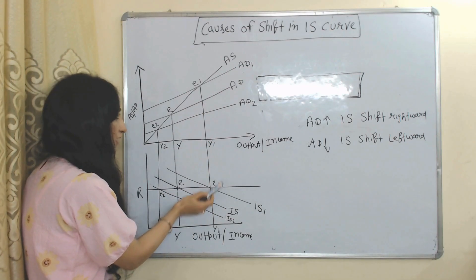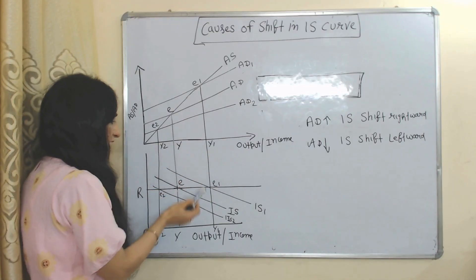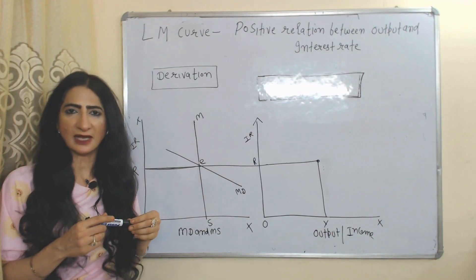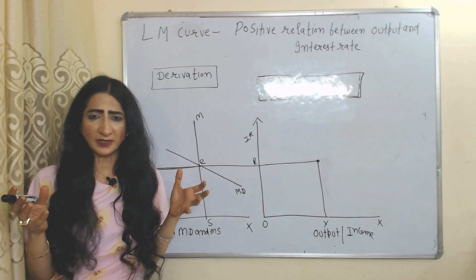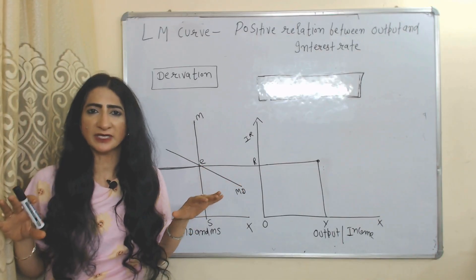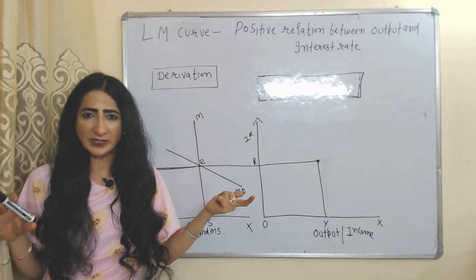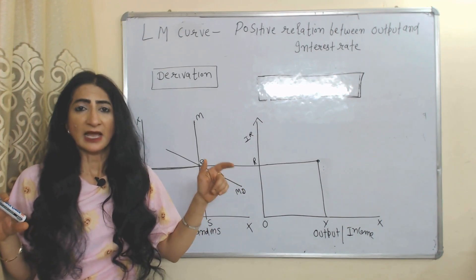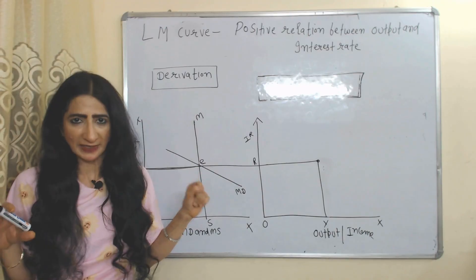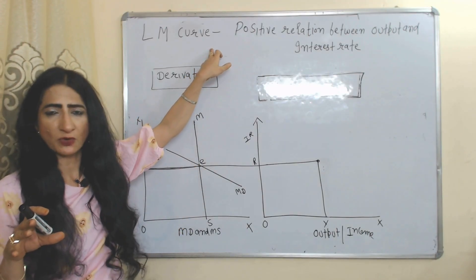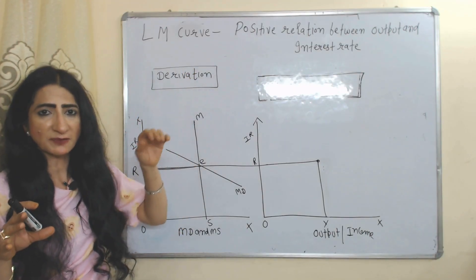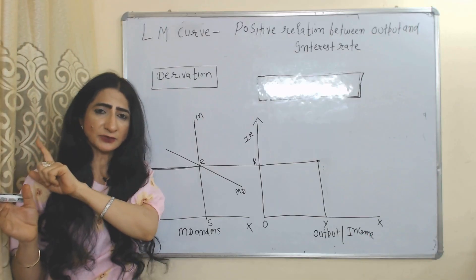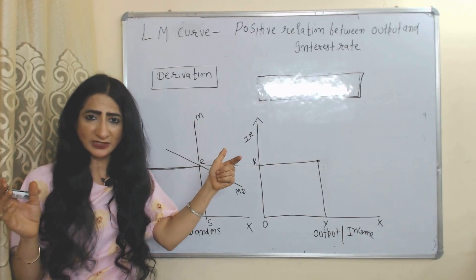Now we will see the LM curve. The LM curve represents the money market. Here L represents liquidity preference, or money demand, and M represents money supply. The LM curve shows the relationship between output and interest rate.